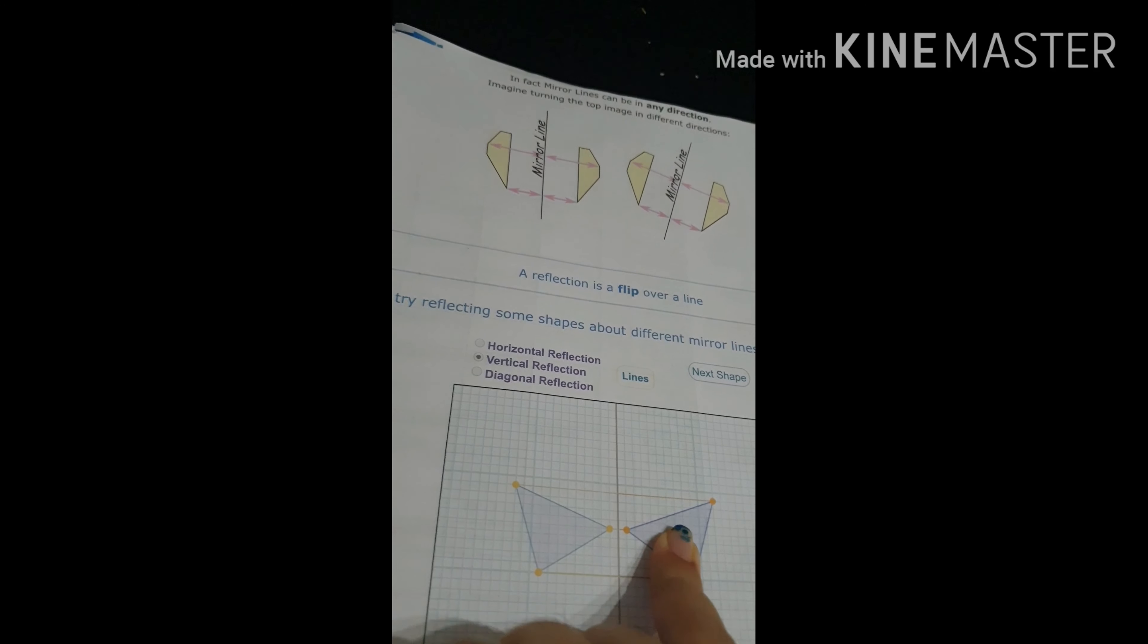One shape is given here, and the mirror line I have taken is a vertical line on the y-axis. So you can see that a triangle is given and the mirror line is on the y-axis. This is the object which you will get after the reflection.